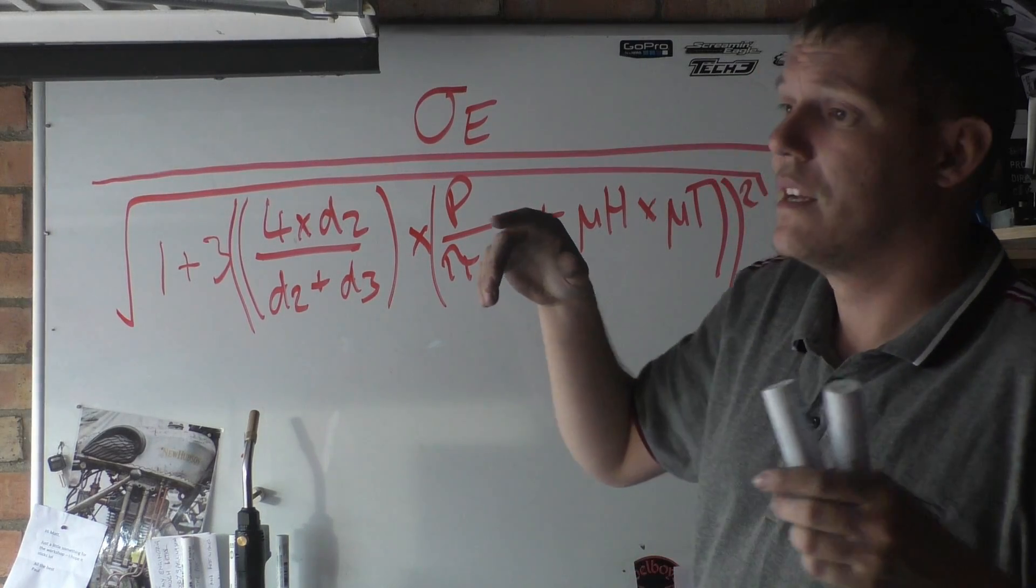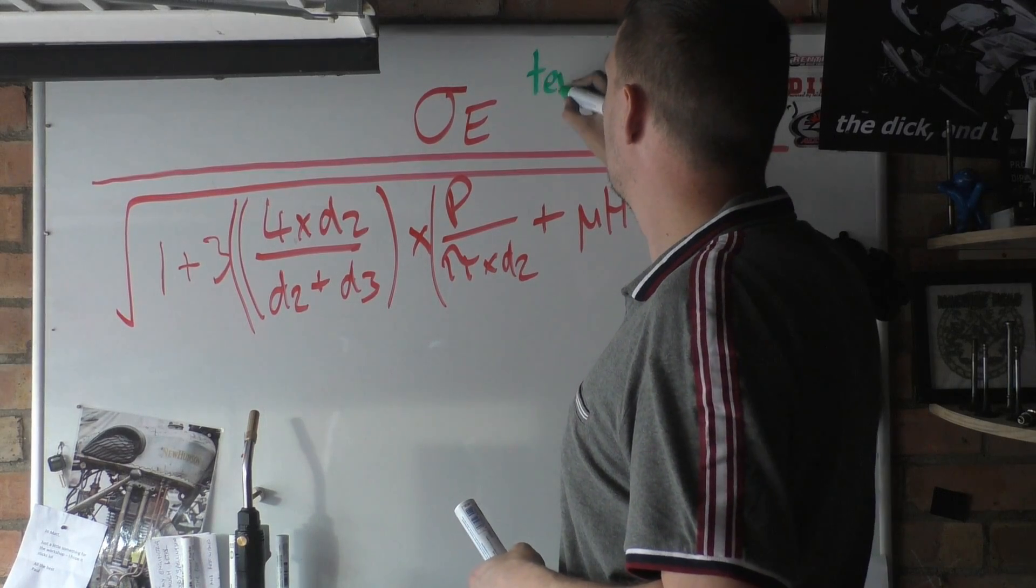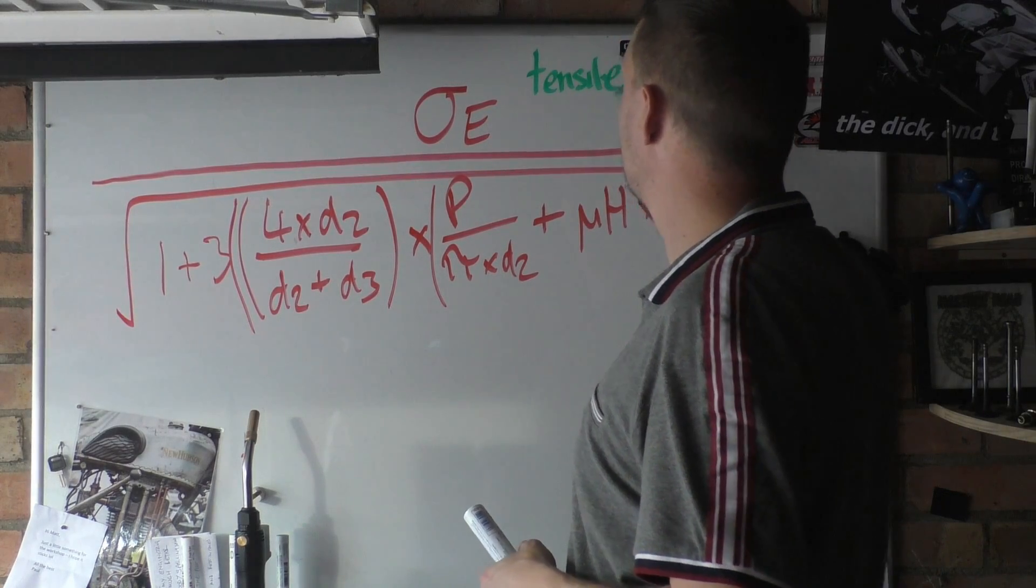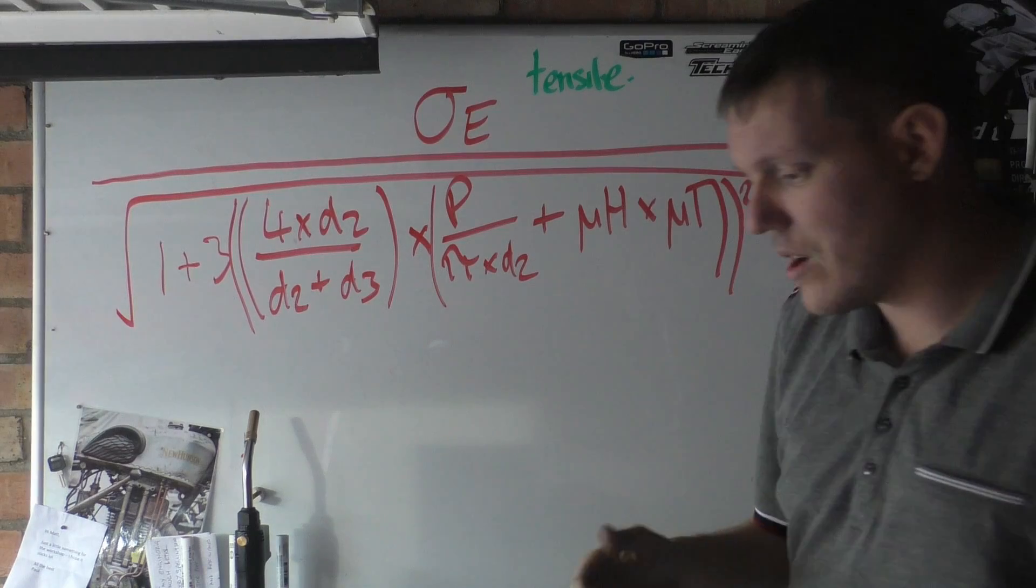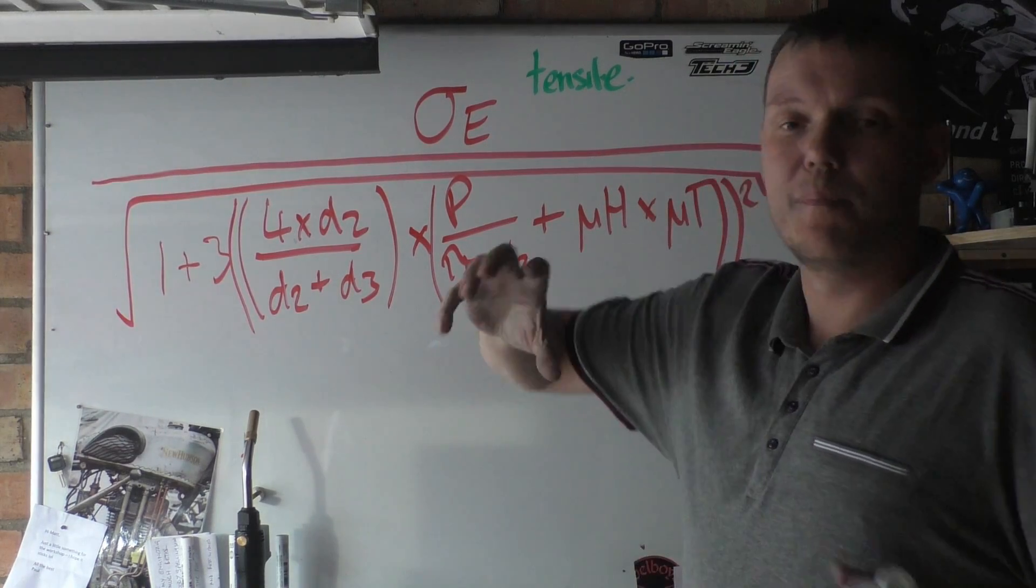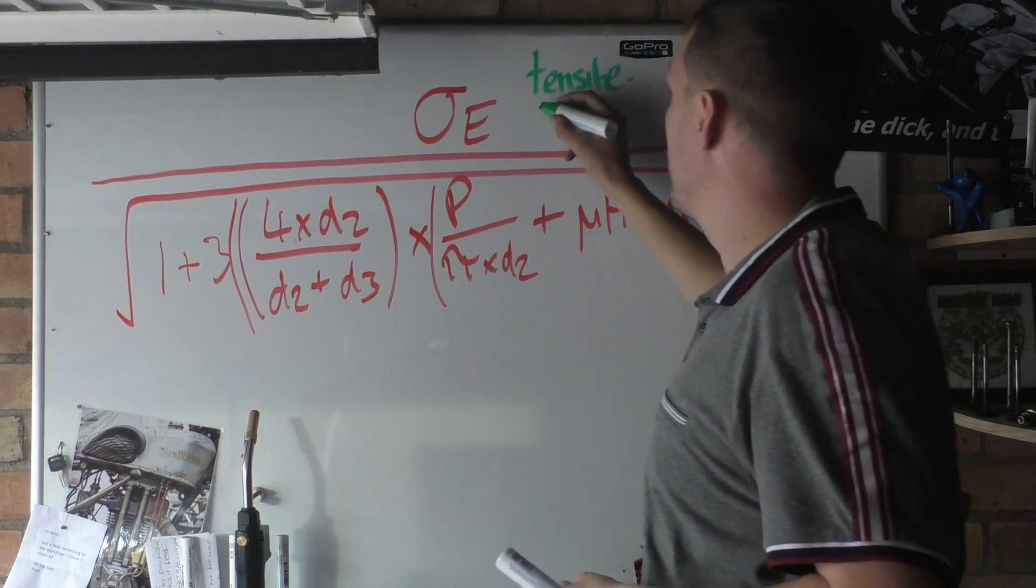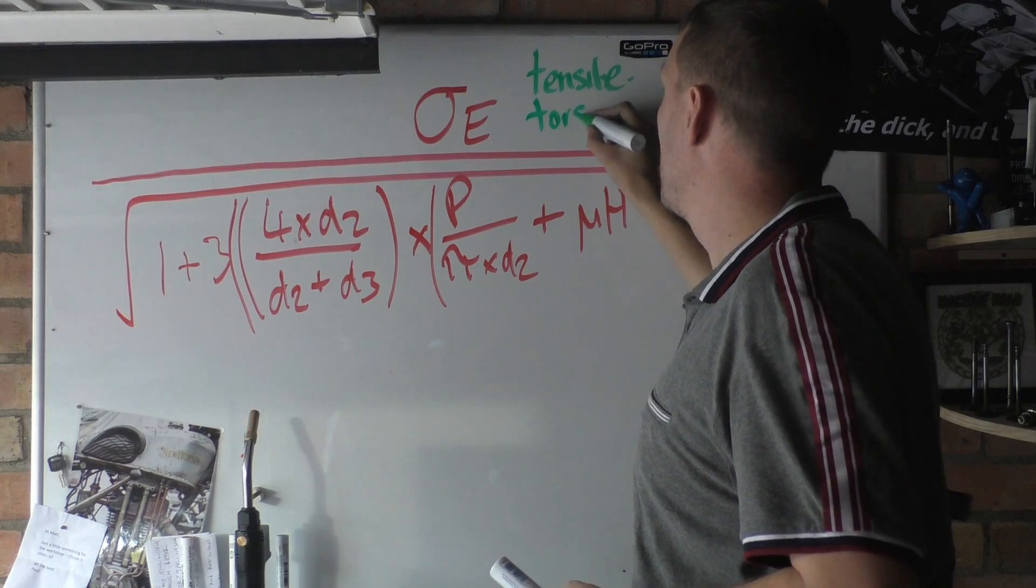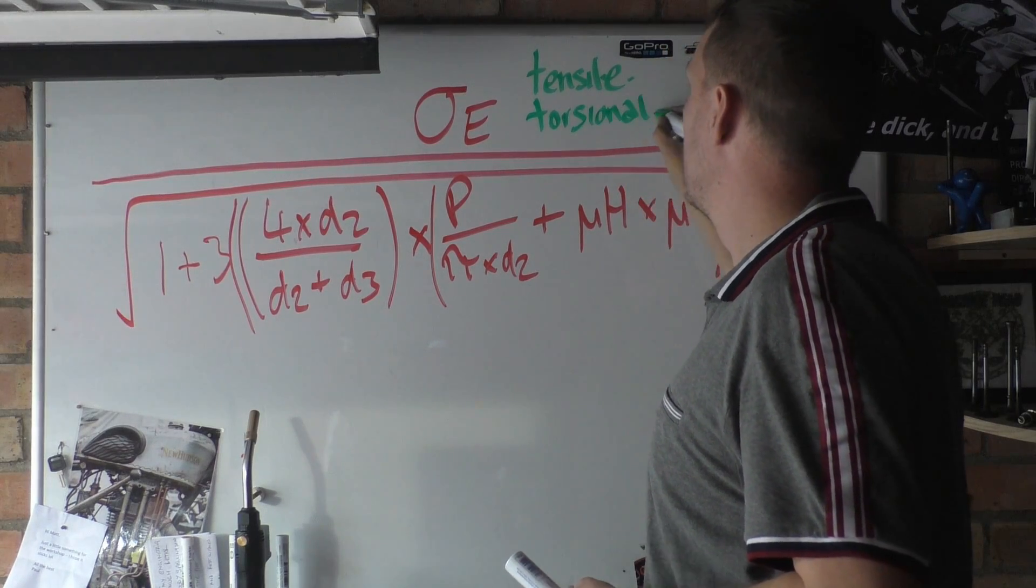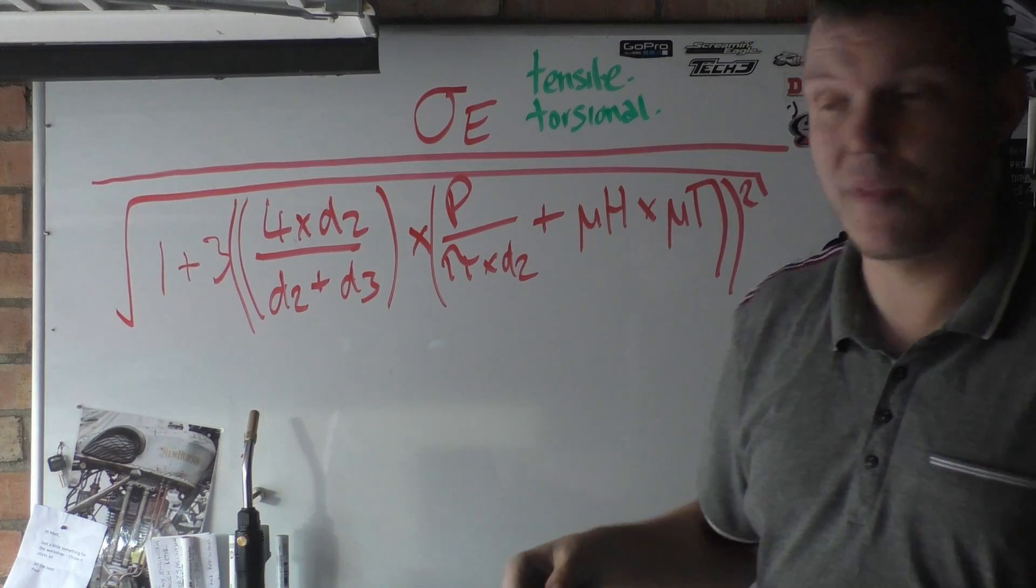So to that effect, we've got tensile stress up here, and then we also have torsional stresses, shear stresses, because we are actually rotating this entire system. So we've got torsional stress. This is our equivalent stress that's up there.